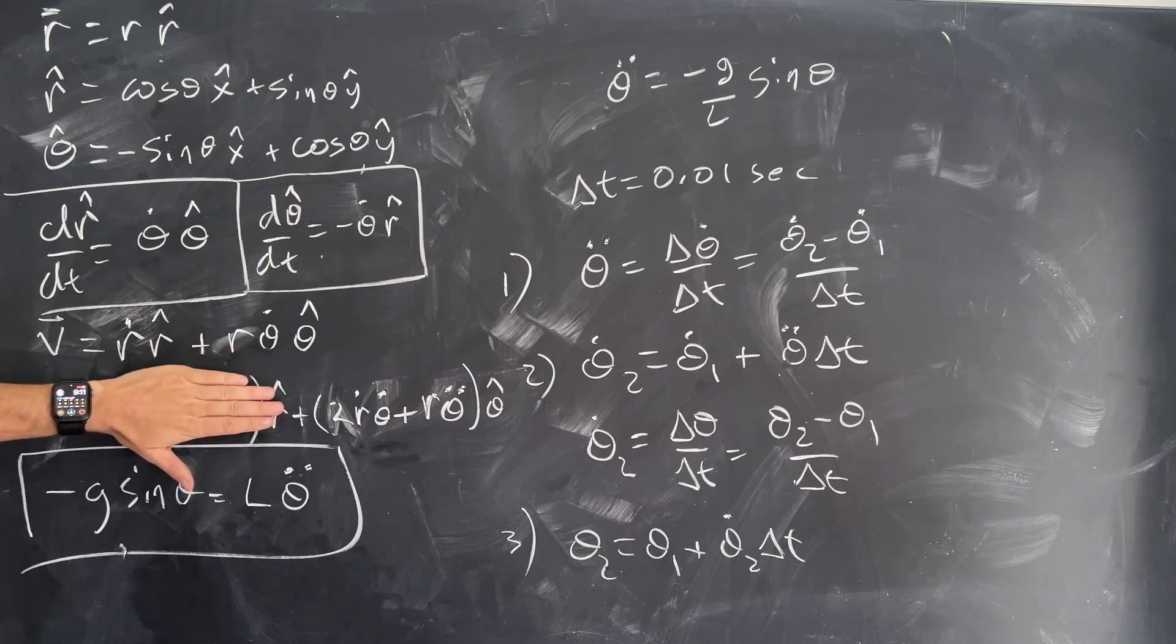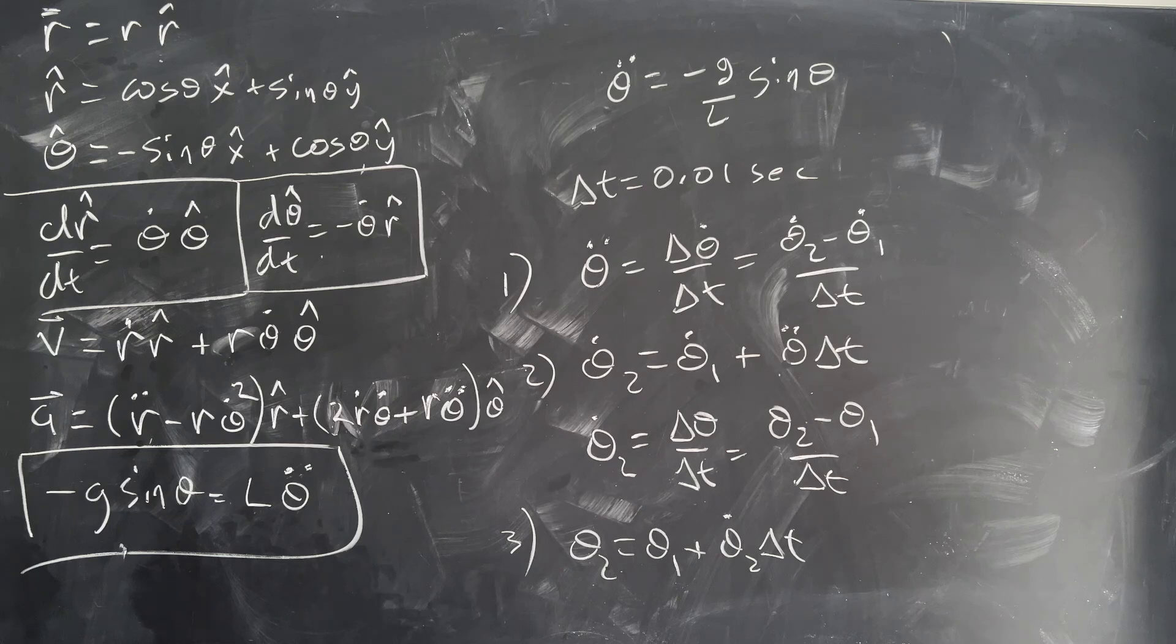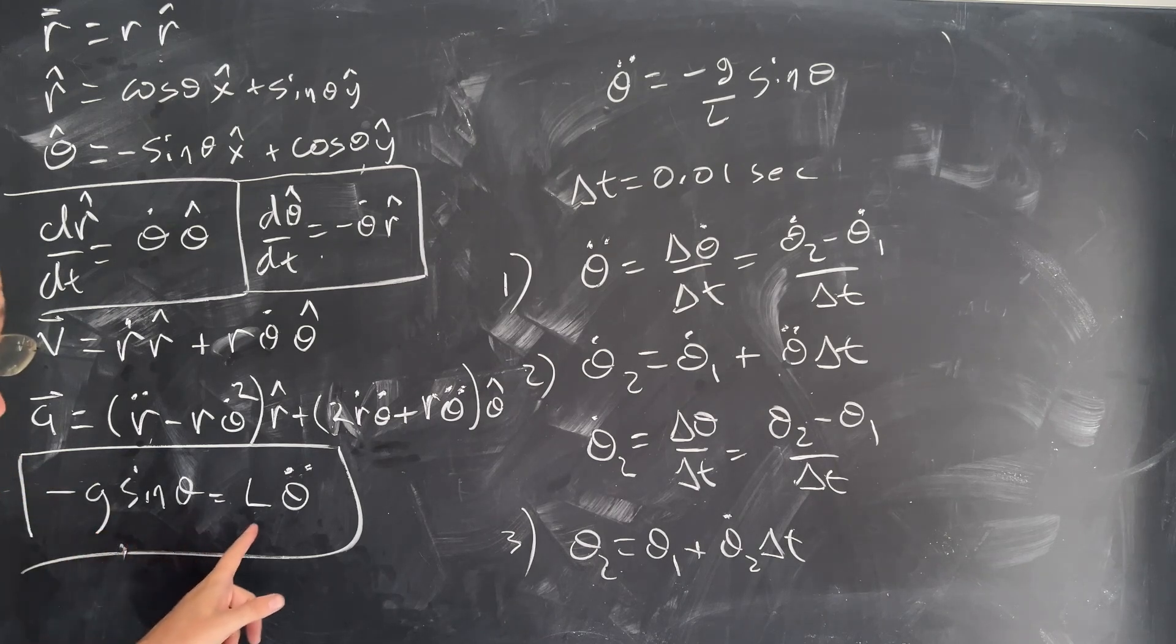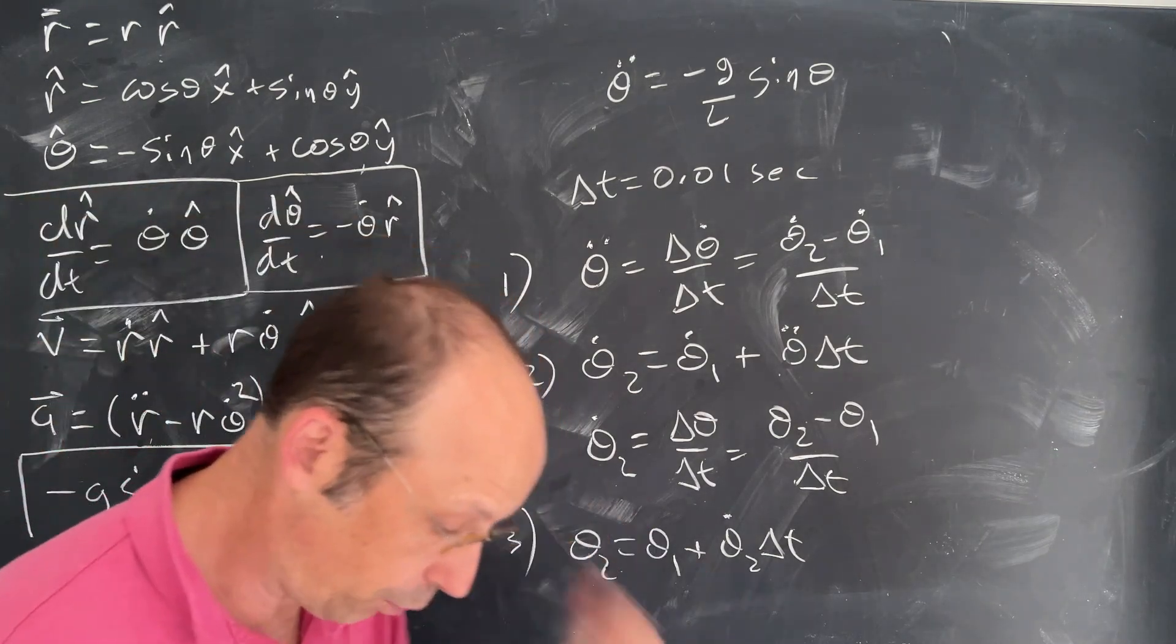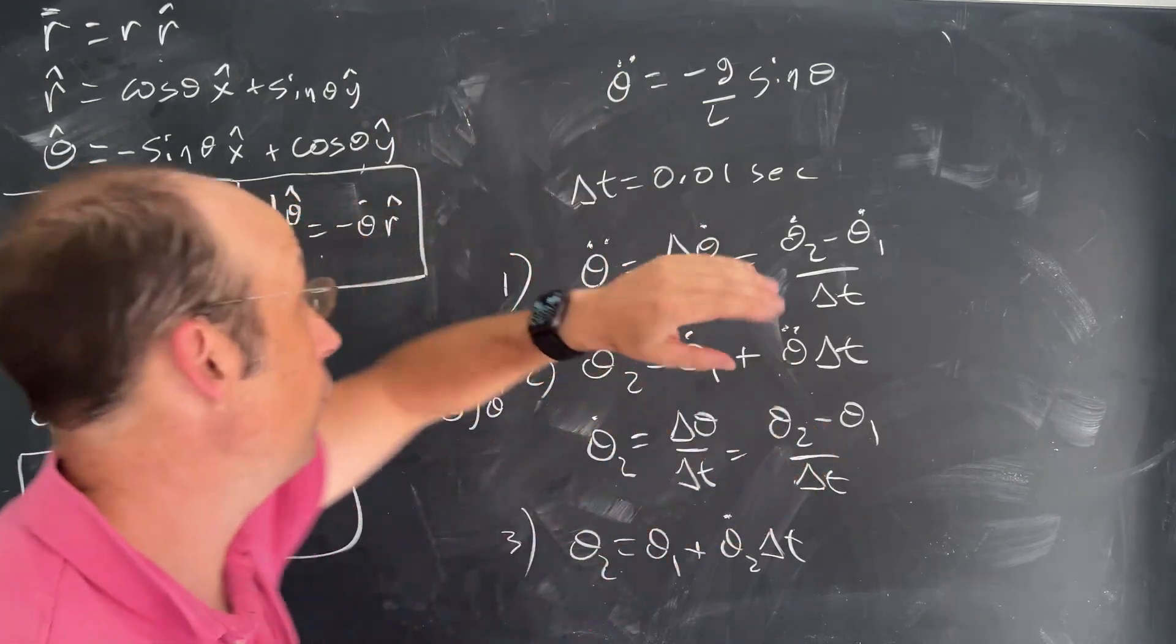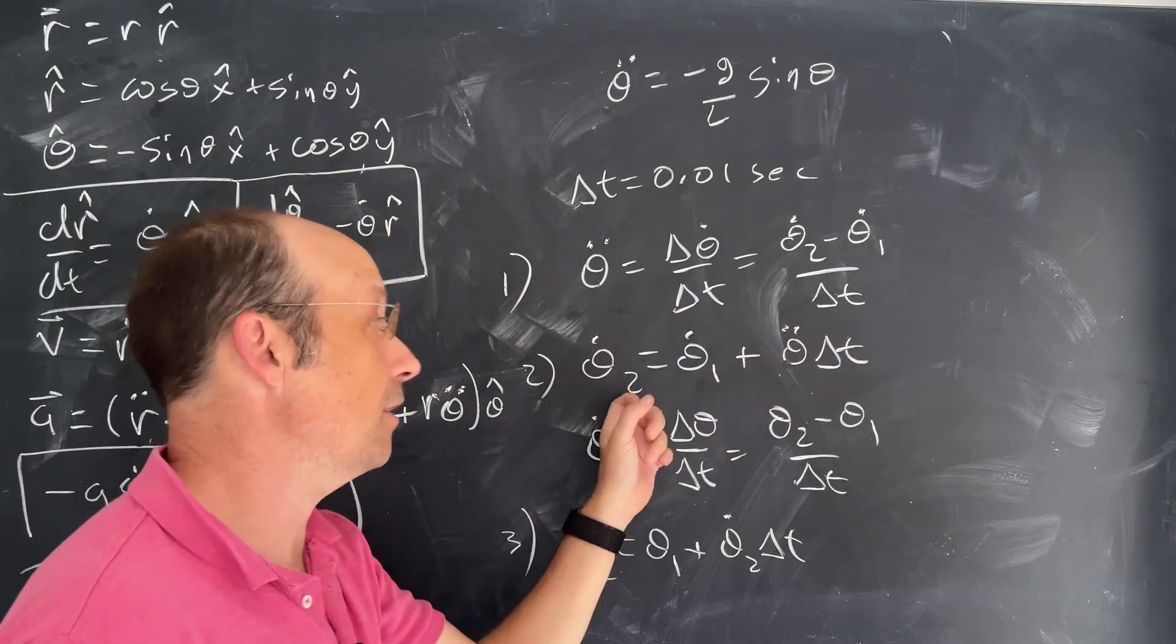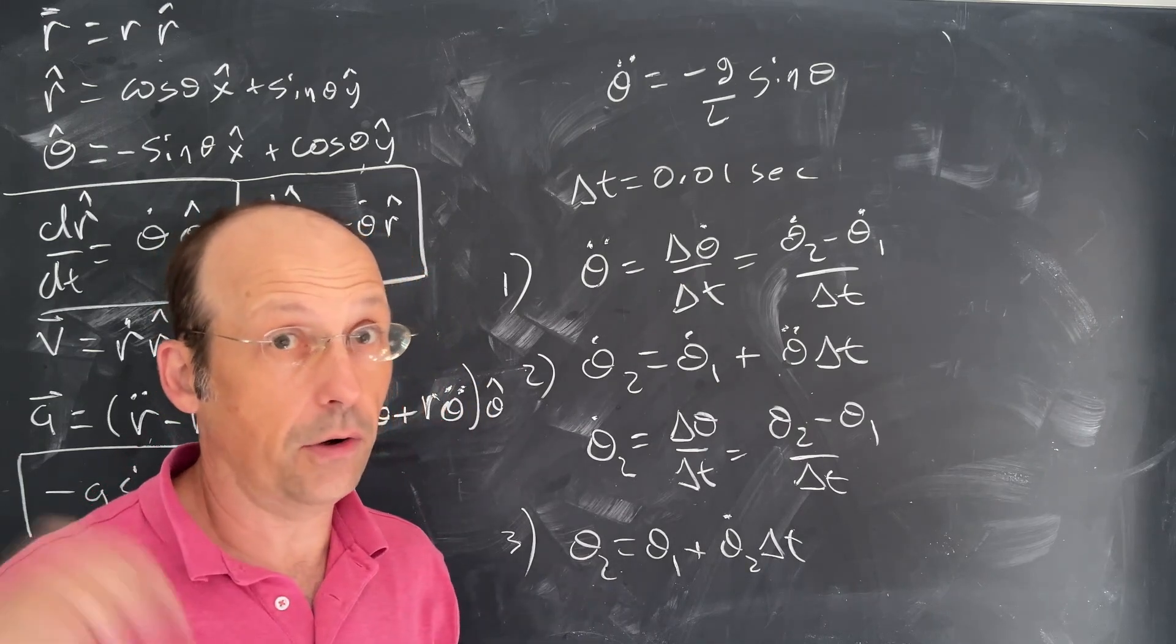But we get down to this is the acceleration in polar coordinates. Of course, that term goes away because R double dot is zero. So now I'm kind of confused. But anyway, we get down to this differential equation. Negative g sine theta is L theta double dot. And again, theta double dot means second derivative with respect to time. So how do we solve that problem? Well, one way is to start with a differential equation, break it into short time intervals, delta t is 0.01 seconds, and then say theta double dot is the change in theta dot over that time interval. And we can use that to update theta dot, and then we can use that to update theta and then do the whole thing over again.